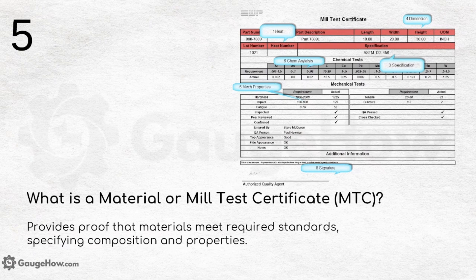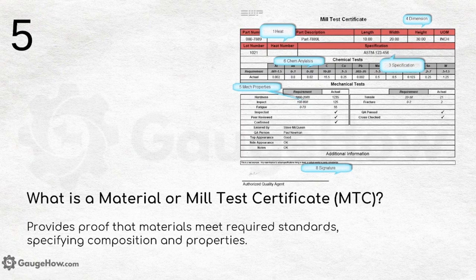What is a material or mill test certificate (MTC)? This is a very important certificate that industry must provide when certain tests have been done. It provides proof that materials meet required standards, specifying composition and properties. The MTC includes dimensions, heat number, chemical analysis performed on the material, mechanical test results and properties, specifications, and signatures of all personnel who worked on it.